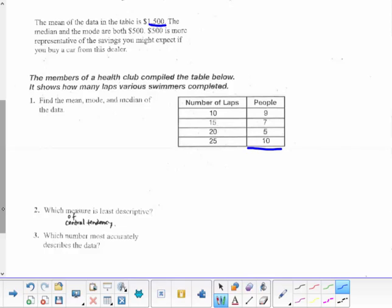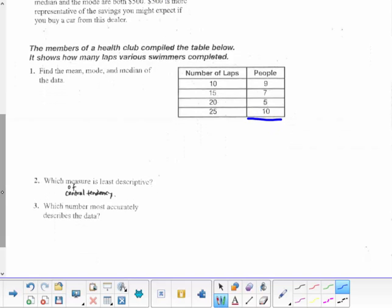Question two says which measure, meaning which measure mean, median, or mode of central tendency, is least descriptive. So what really doesn't represent this data. And which number most accurately describes this data. So answer these three questions, pause the video now. We'll go over that in class tomorrow.